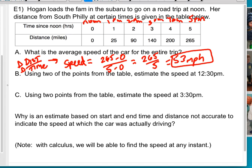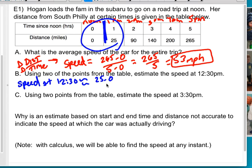Using two points on the table, estimate the speed at 12:30. Well, 12:30 is going to fall right here, 12:30 is going to fall between these two. So I'm going to use these two points, and I'm going to go ahead and say that the speed at 12:30 is approximately, and then I'm just going to do the same thing, change in distance over change in time. So 25 minus zero over one minus zero, which would be 25 miles per hour.